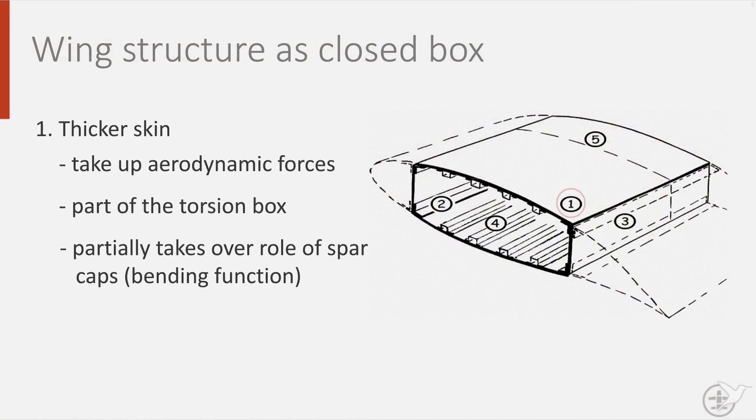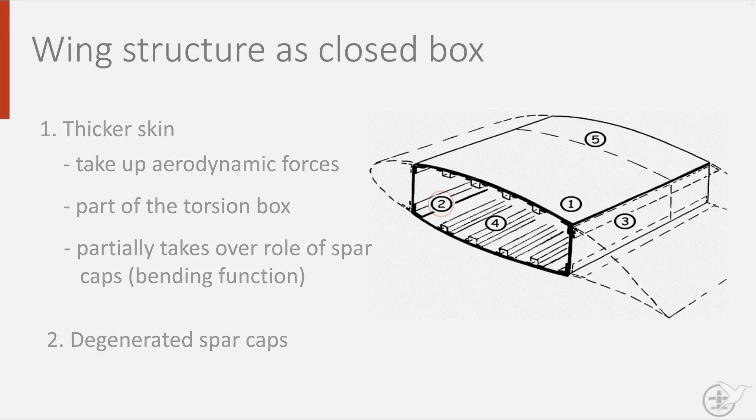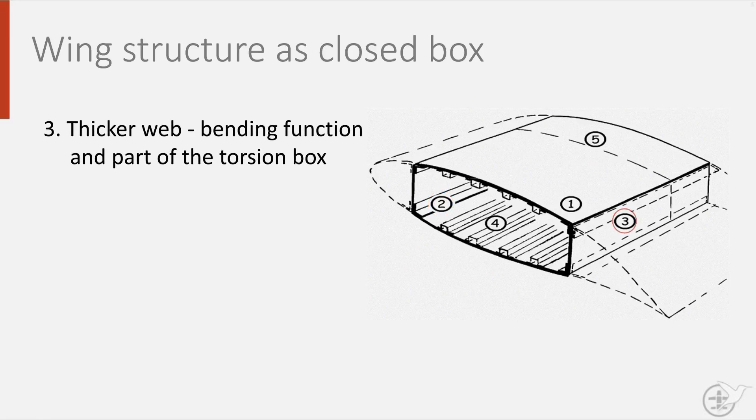A wing structure can very much be seen as a closed box and these days consists of a thicker skin, which takes off the aerodynamic forces, closes off the upper and lower part of the torsion box, and also partially takes on the role of the spar caps. As a result, the spar caps are thinner and degenerated. This results also in a thicker spar web, allowing it to perform the bending function as well as be part of the torsion box.